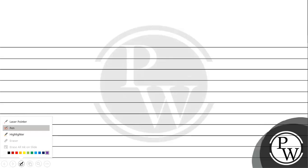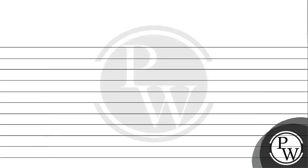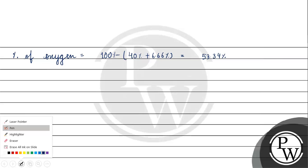Now the total percentage of carbon and hydrogen is 40% plus 6.66% equals 46.66%. Since the total must be 100%, the percentage of oxygen is 100% minus 46.66%, which gives us 53.34% oxygen.